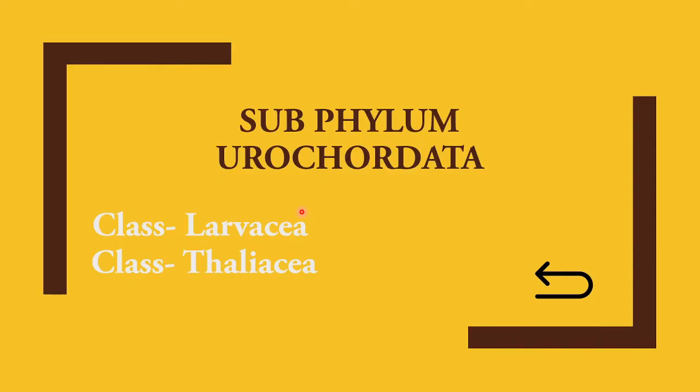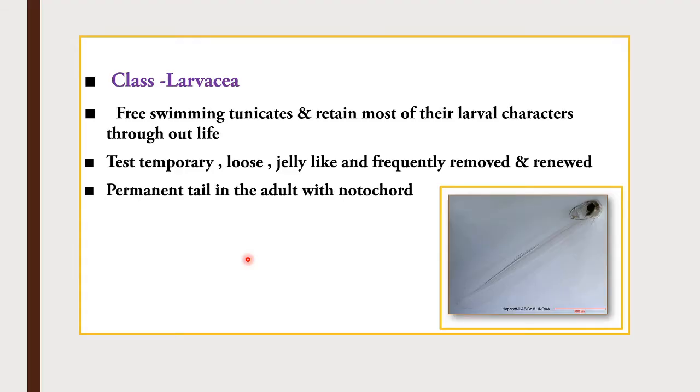Welcome back to another session. Under subphylum Urochordata there are two classes we are going to discuss here: class Larvaceae and class Thaliacea.